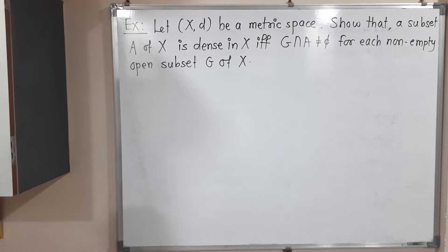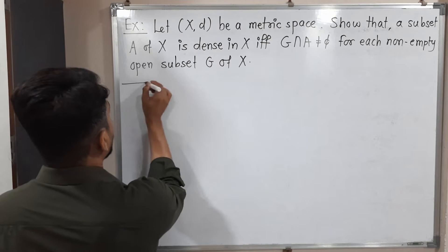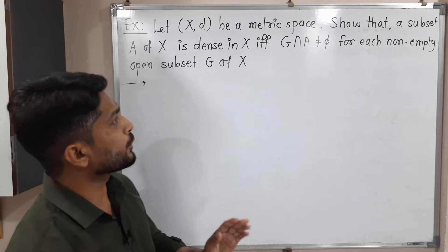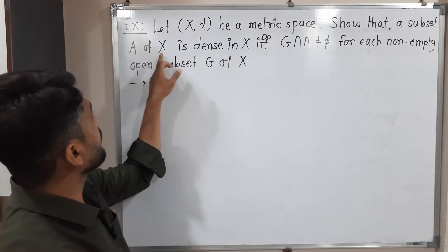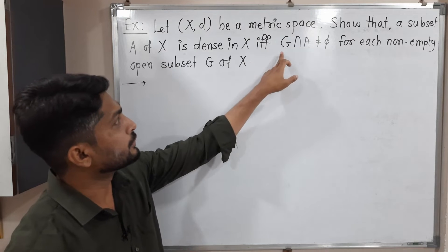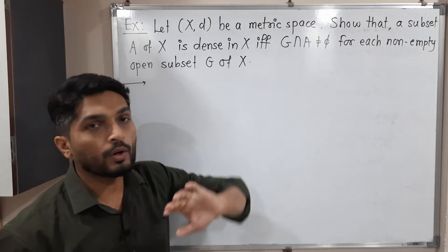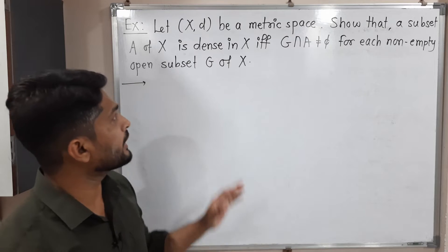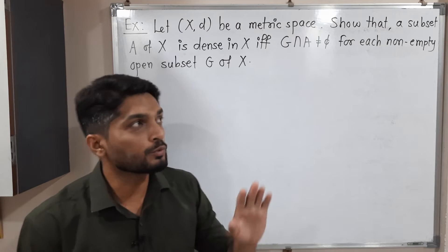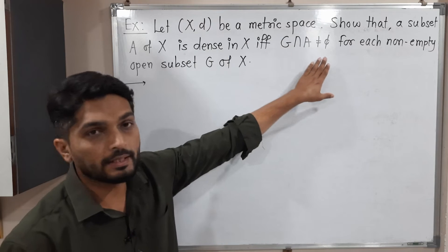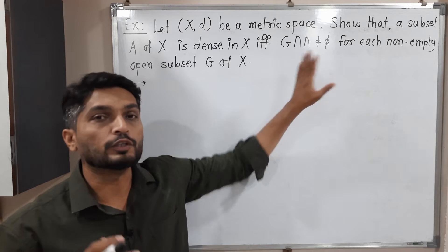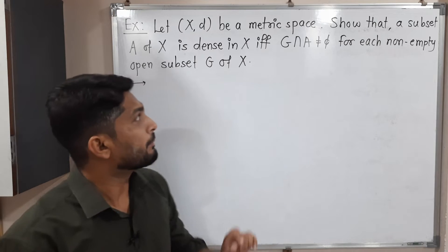In this video we are going to discuss this example. We have a metric space (X, d) and we have to show that a subset A of X is dense in X if and only if G intersection A is not equal to phi for every non-empty open subset G of X. Since it is an if-and-only-if, we will assume one part and prove the second part, then assume the second part and prove the first part.